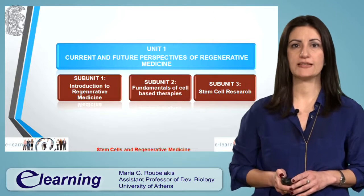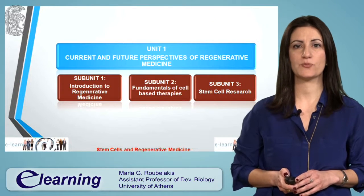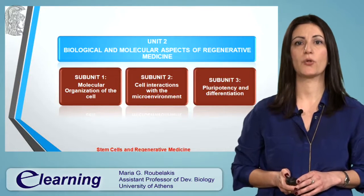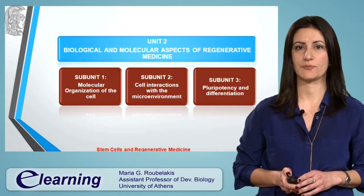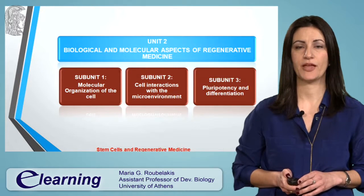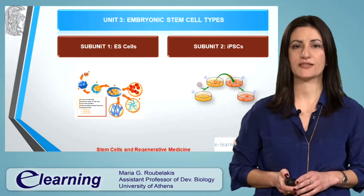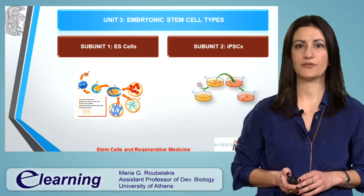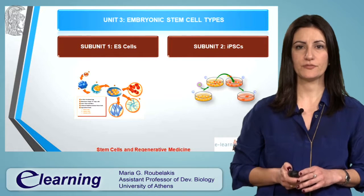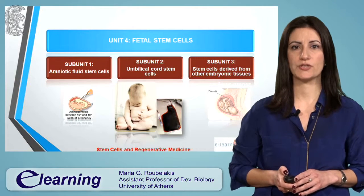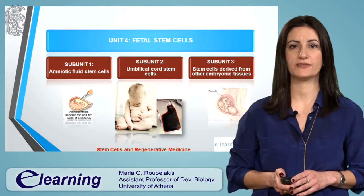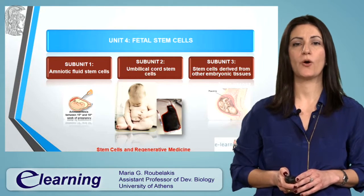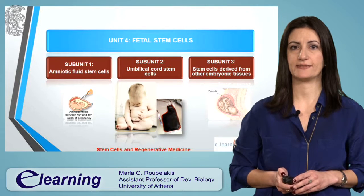The first unit discusses the current and future perspectives of regenerative medicine. The second unit focuses on the biological and molecular aspects of regenerative medicine. Embryonic stem cell types such as embryonic stem cells and induced pluripotent stem cells are described in the third unit. The fourth unit focuses on stem cells derived from fetal tissues such as amniotic fluid, umbilical cord, or other embryonic tissues such as placenta.